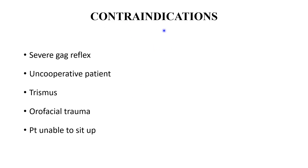There are certain contraindications or limitations in performing indirect laryngoscopy. If the patient has a severe gag reflex or is very apprehensive, it may be quite difficult to perform. Uncooperative patients or small children are also challenging. If the patient has limited mouth opening — trismus — the mirror will not be able to pass inside. Any orofacial trauma, glossitis, or ulcers on the tongue also make the procedure very difficult, as we have to pull out and hold the tongue.